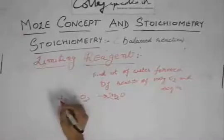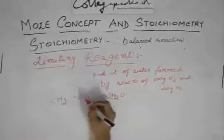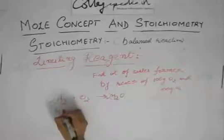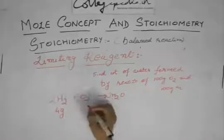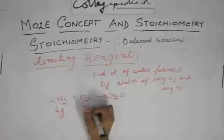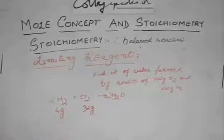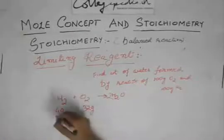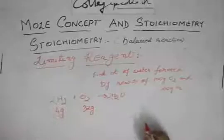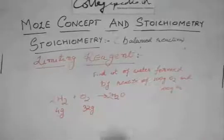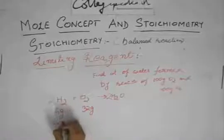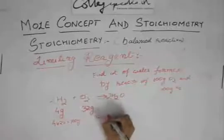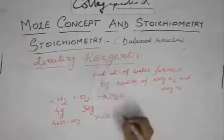So here we have 2 moles of hydrogen reacts with 1 mole of oxygen. So 2 moles over here would give you 4 grams and 1 mole of oxygen would give you 32 grams. So 4 grams react with 32 grams. So 4 into 25, that is 100 gram, would react with 32 into 25, that is whatever XYZ grams.